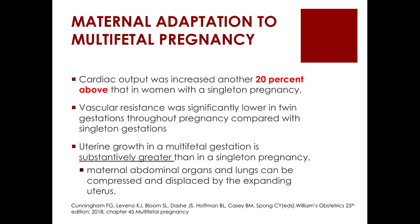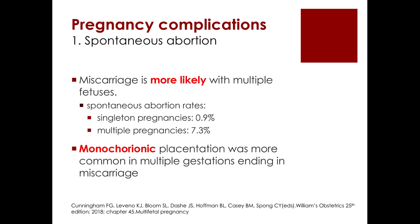Vascular resistance is significantly lower in twin gestations throughout pregnancy compared with singleton gestations. Uterine growth is substantially greater than in singleton pregnancy, and because of this, maternal abdominal organs and lungs can be compressed and displaced by the expanding uterus.